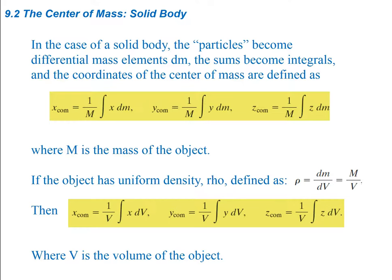In the case of a solid body, the particles become differential mass elements and the sums become integrals. Instead of a particle, say we have an actual object like a cube. Inside this cube, we have differential mass elements that are three-dimensional — a little tiny differential cube with a mass of dm. If the whole thing's capital M, then just a little element inside is dm, the differential mass element. The sum of all these differential elements will be integrals.